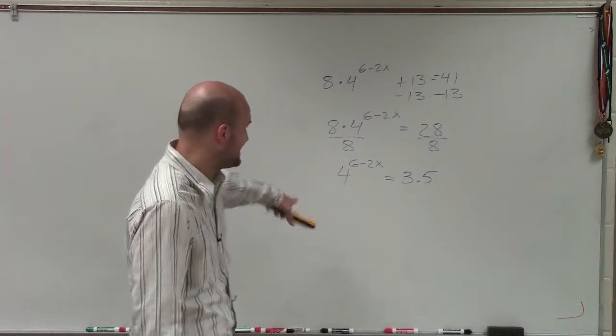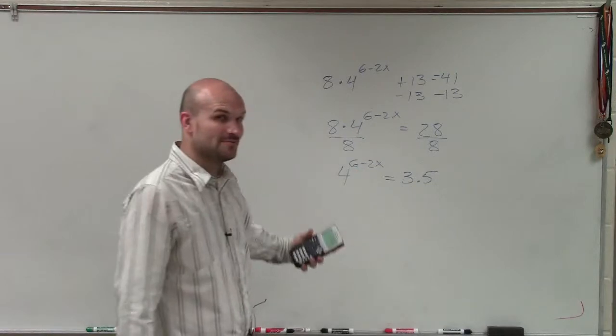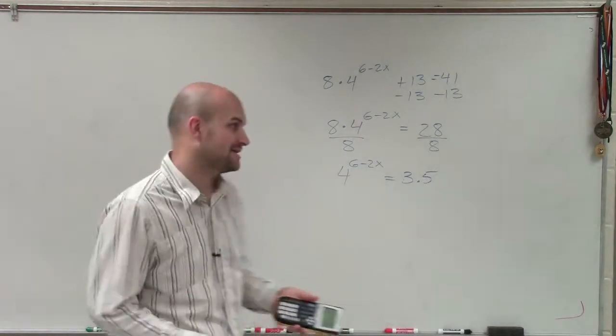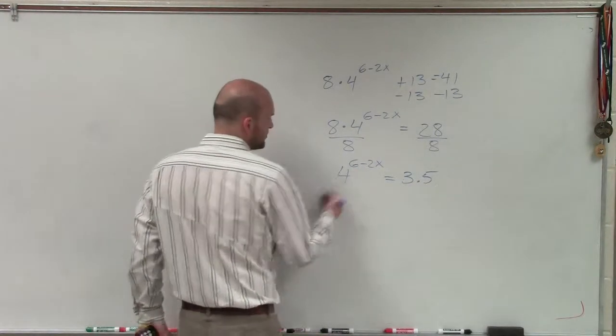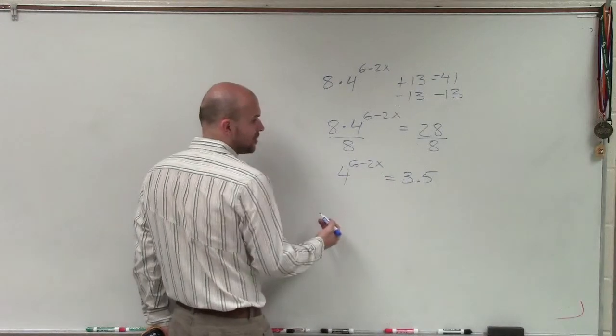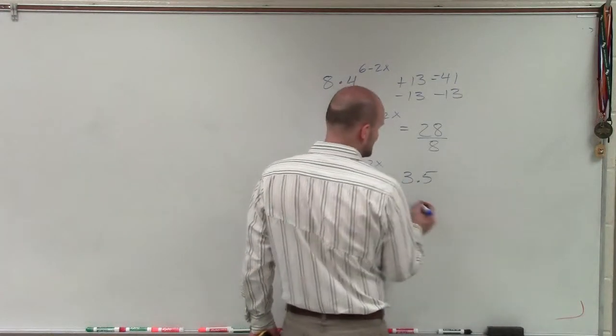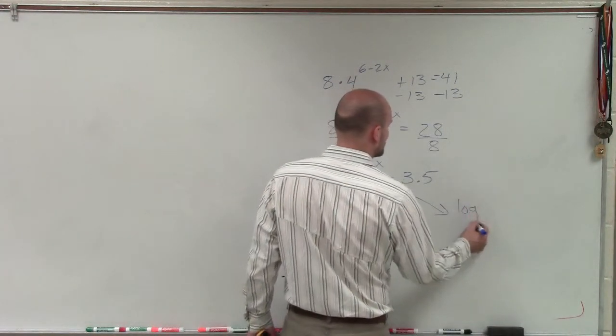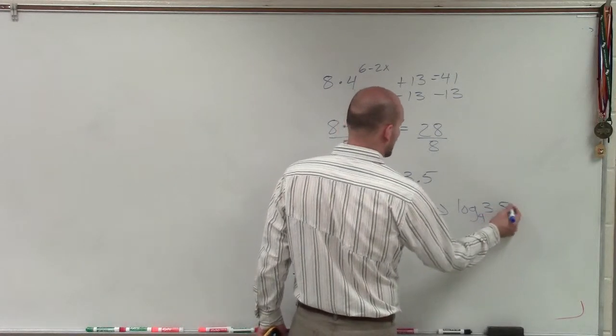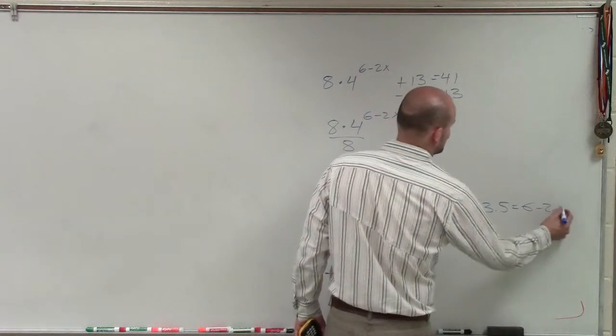All right, so now, ladies and gentlemen, what I need to do is I need to get this x off the exponent. So there's a couple different ways I can do this. But if I notice, if I take the log of both sides, right now I could convert this to a logarithmic equation. To create this to a logarithmic equation would be log base 4 of 3.5 equals (6 minus 2x).